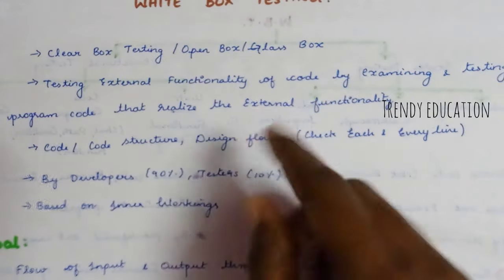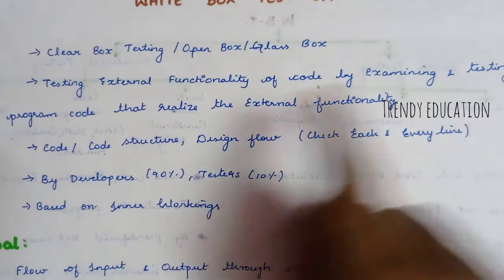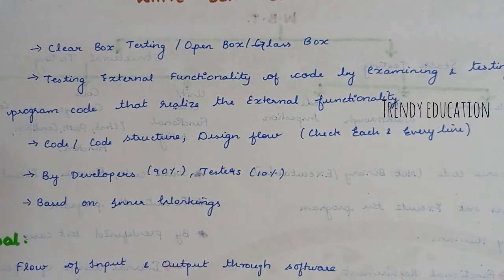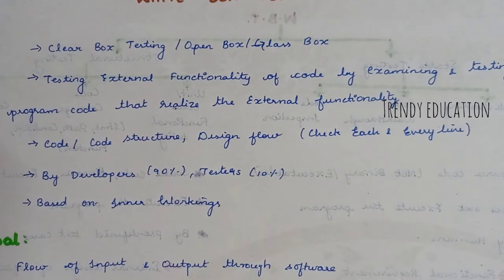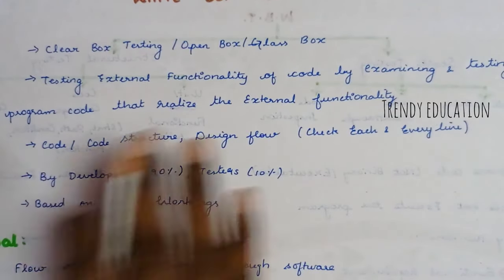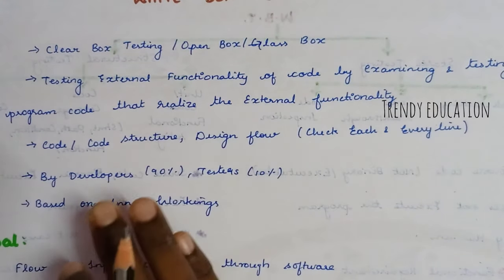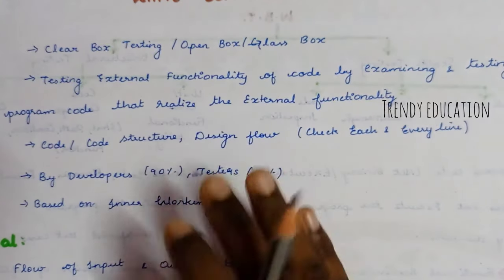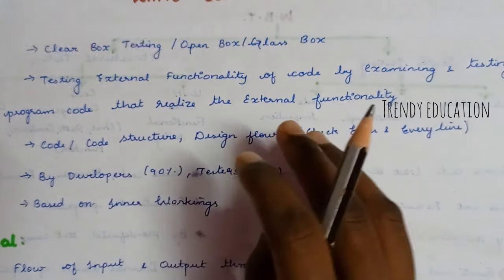White box testing involves testing the external functionality of code by examining and testing the program code that realizes that external functionality. You can also check the internal functionality of code by looking at the code structure and design flow — these interact together.